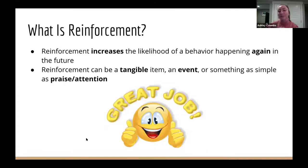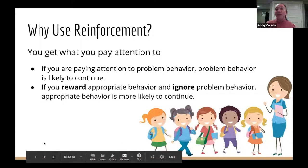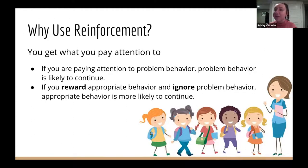Reinforcement increases the likelihood that a behavior we want to see — or don't want to see — happens again in the future. It can be something tangible, an event, or praise and attention. The key principle is: you get what you pay attention to. If you pay attention to problem behavior, it's more likely to continue. But if you reward appropriate behavior and ignore problem behavior, the appropriate behavior is more likely to continue.